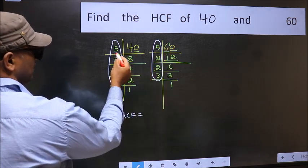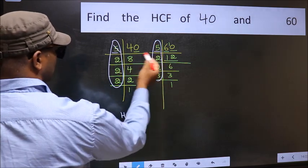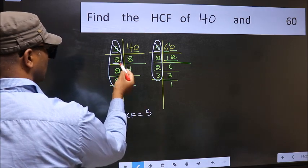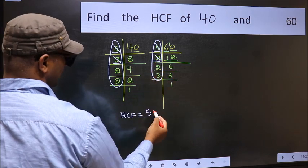Starting with the number 5. Do we have 5 here? Yes. So cut 5 right here. Next number 2. Do we have 2 here? Yes. So cut 2 right here.